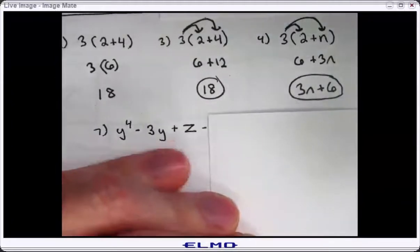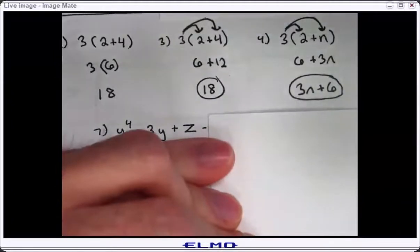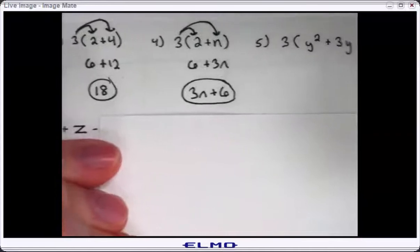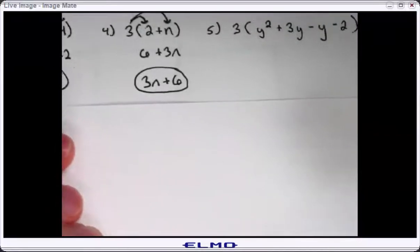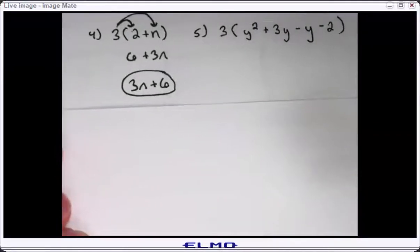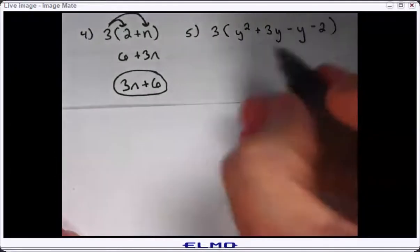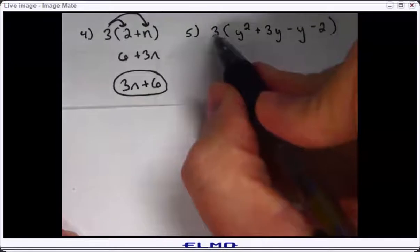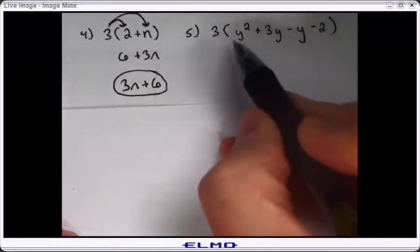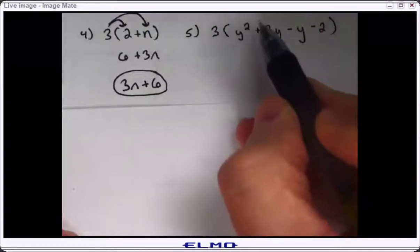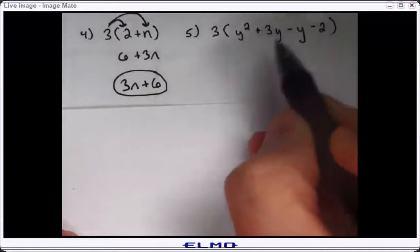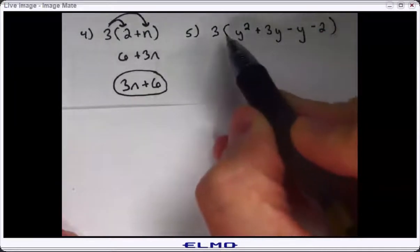In simplest form, there are two terms in your answer. Number five — I could distribute this three to all the terms in parentheses. There are four terms.